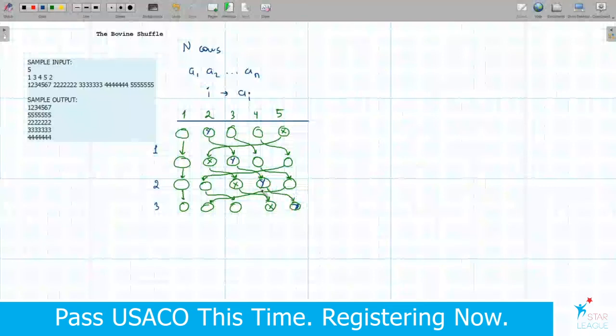Yeah. So we can start from the beginning, and a cow in position 1, to find where it was before, we are searching for 1 in this sequence. And it's in the first position, so that's why we know that before the shuffle, it was here. And cow 2, for example, we are looking for 2 in this permutation, in these numbers, so we find it in position 5, and it means that before the shuffle, it was here.